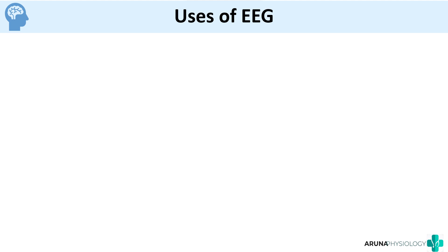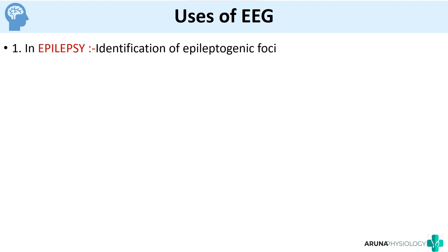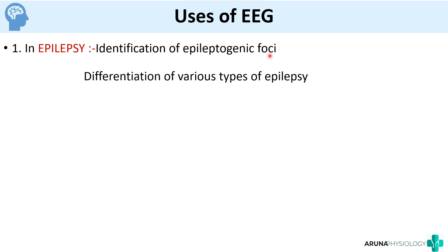Now we will move on to the uses of EEG. The most important use is in epilepsy. In epilepsy or when you have seizures, we want to identify from where these seizures originated. With the help of EEG, you can identify the epileptogenic foci — which part of the brain is causing the epilepsy. You can also differentiate between various types of epilepsy.